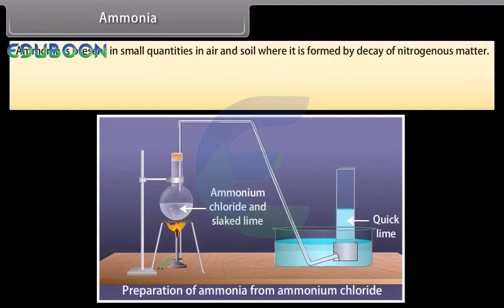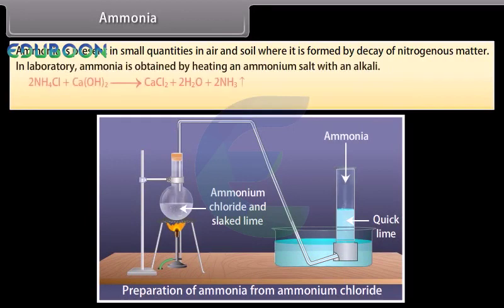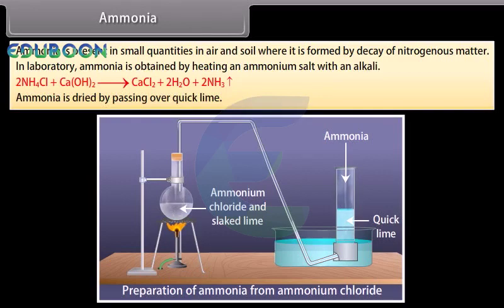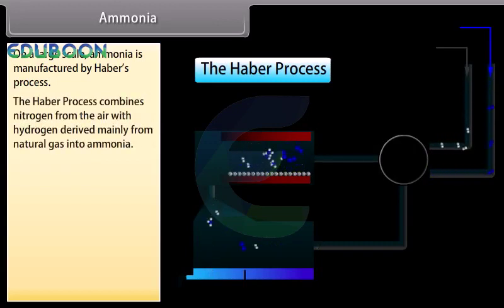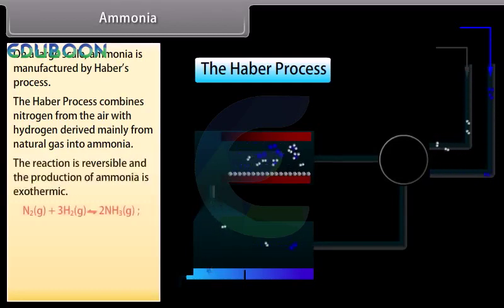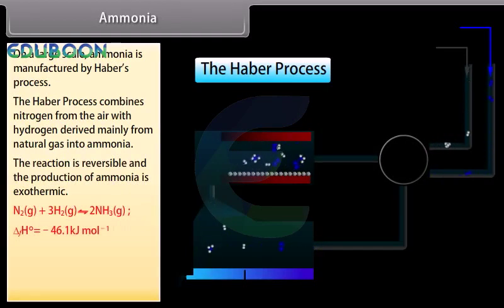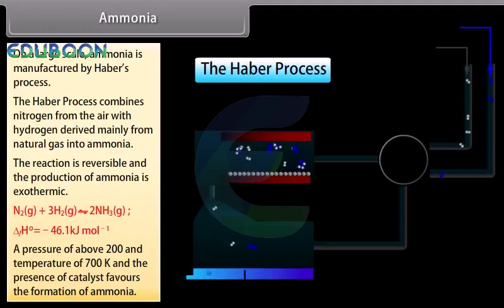Ammonia is present in small quantities in air and soil, where it is formed by decay of nitrogenous matter. In the laboratory, ammonia is obtained by heating an ammonium salt with an alkali, and is dried by passing over quicklime. On a large scale, ammonia is manufactured by Haber's process. The Haber's process combines nitrogen from the air with hydrogen derived mainly from natural gas into ammonia. The reaction is reversible and the production of ammonia is exothermic.